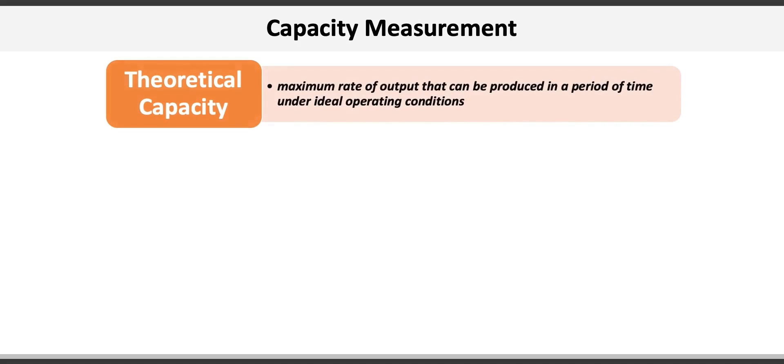First, there's theoretical capacity, which is the maximum rate of output that can be produced in a period of time under ideal operating conditions. For example, if we operated our factory 16 hours per day, 7 days a week, we could produce 100,000 widgets per week.